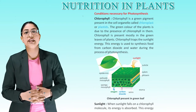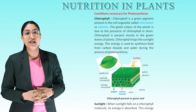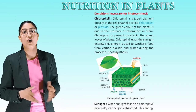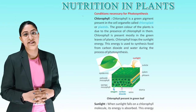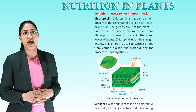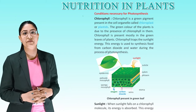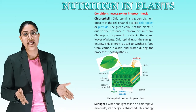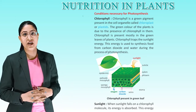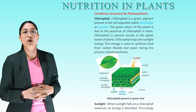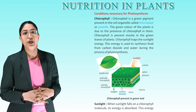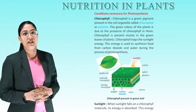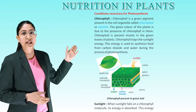Conditions necessary for photosynthesis. First: chlorophyll. Chlorophyll is a green pigment present in the cell organelle called chloroplast or plastids. The green color of plants is due to the presence of chlorophyll in them. Chlorophyll is present mostly in the green leaves of plants and traps sunlight energy. This energy is used to synthesize food from carbon dioxide and water during photosynthesis. This diagram shows chlorophyll present in green leaves.